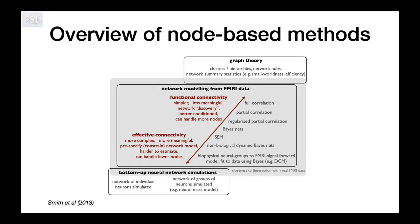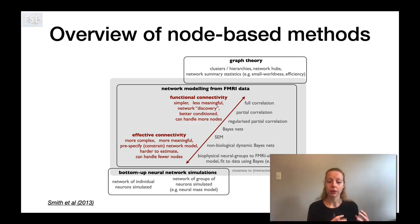This is an overview of several different node-based methods. Essentially, the axis in here goes from closeness to the data to being a little bit further removed from the data. Effective connectivity tries to draw stronger conclusions about the patterns that we see in the data relative to functional connectivity. And then graph theory is even further removed in terms of describing higher level summaries of the structure in the network.